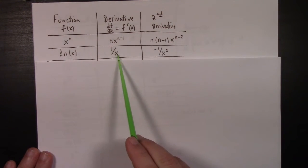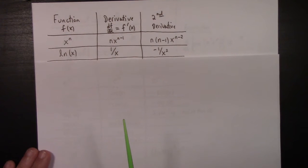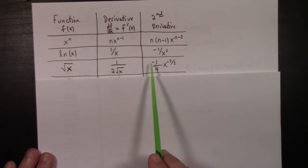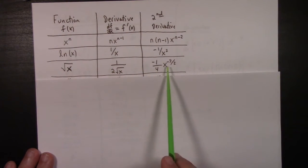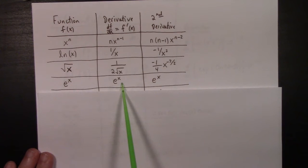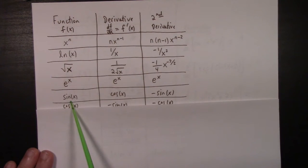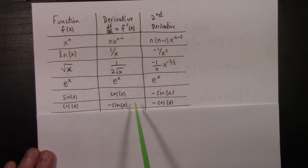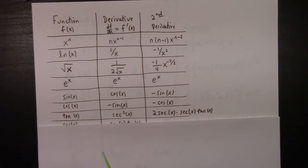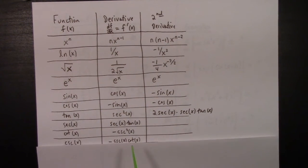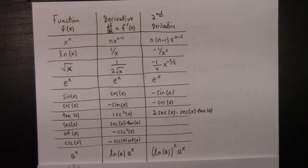The derivative of natural log of x is 1 over x; differentiate once more and you get minus 1 over x squared. The derivative of square root of x is 1 over twice the square root of x; differentiate once more and you pick up a minus half power, giving minus 1 fourth times x to the minus 3 halves. The derivative of e to the x is e to the x — that goes on forever. Sine differentiates to cosine; cosine differentiates to minus sine; minus sine differentiates to minus cosine. The derivative of tangent is secant squared; the derivative of secant is secant tangent; the derivative of cotangent is minus cosecant squared. The derivative of a to the x is natural log of a times a to the x. These things should all be familiar to you.